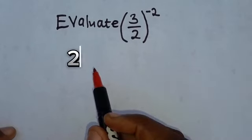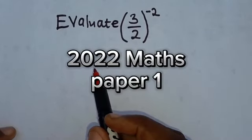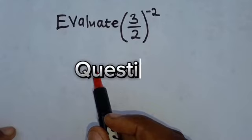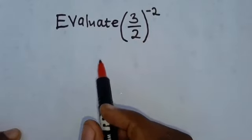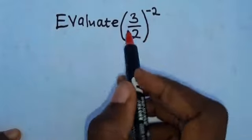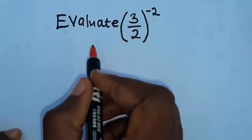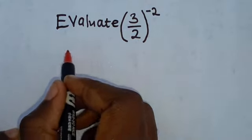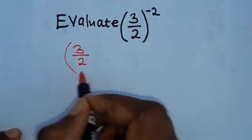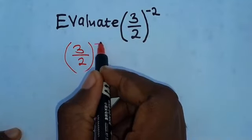In this video we're going to look at the 2022 mathematics paper 1 question 1 for internal candidates. The question says evaluate. Let's rewrite this expression that we are told to evaluate. The expression is 3 over 2 to the power negative 2.